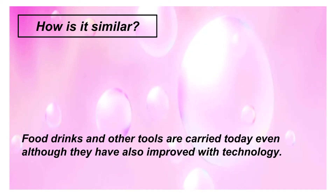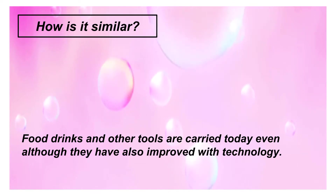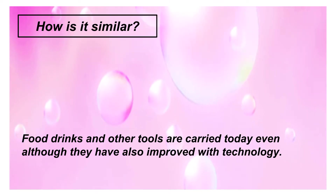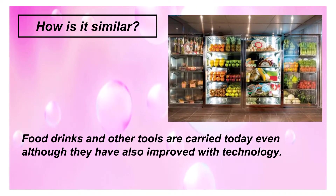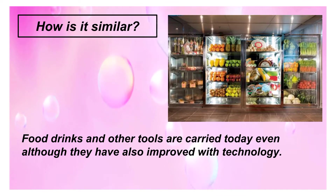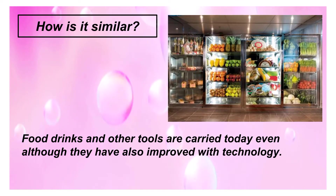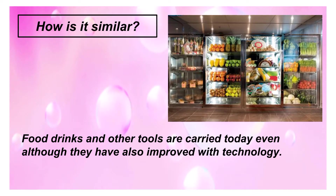How is it similar? What is the similarity between ancient times and now? Food, drinks, and other tools are still carried today, even though they have improved with technology. Today there are cruise ships with refrigerators, hotels, ovens — all the facilities you get in a five-star hotel. And that's why there are ship pirates even today.